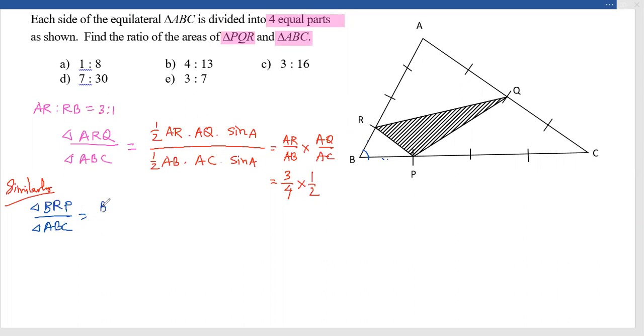Directly I am writing BR by BA multiplied by BP by BC. BR by BA is nothing but one-fourth multiplied by BP by BC is again one-fourth. So these two triangle ratios are like that.